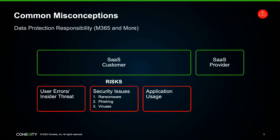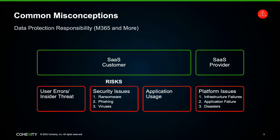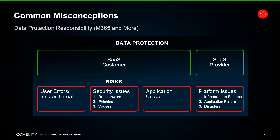Now let's talk about the SaaS provider. When you look at their agreements, you'll find they're mostly responsible for infrastructure failures, application failures, and they'll help with disasters — sometimes you even need add-on agreements for disaster-level coverage. The data protection or backup and recovery piece is often separate, or they offer you a separate tool that you manage independently from your other backup and recovery solutions. In any case, data protection is truly a shared responsibility.